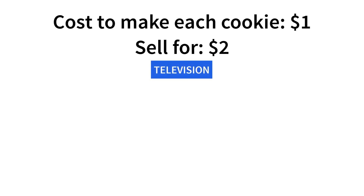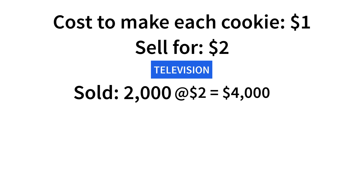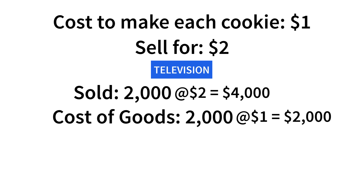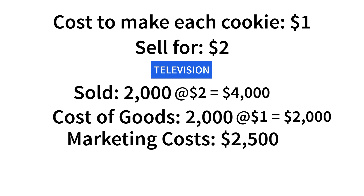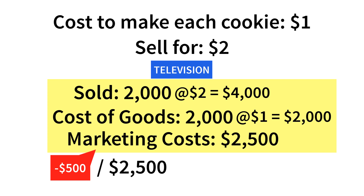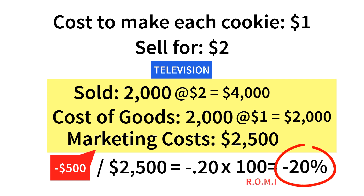From my television ad, I sold 2,000 cookies. So my television ROMI would be: 2,000 times $2, because I sell every cookie for $2, minus $2,000 which is what it cost me to make the cookies, minus $2,500 because that's how much I paid total for the production of the commercial and the actual commercial ad spend. That gives me negative $500. Divide that by $2,500 — my marketing spend — and that gives me negative 0.20. Multiplied by 100, that's a negative 20% ROMI. By crunching the numbers and calculating your ROMI, it makes it really easy to spot the bad marketing investments, and also the really good ones.